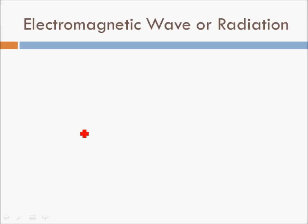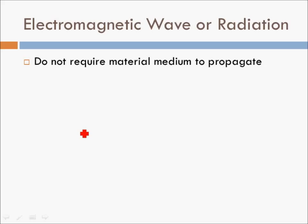Electromagnetic waves are also known as electromagnetic radiation. The first key point is that they do not require a material medium to propagate — they do not require matter. For example, sunlight travels from the Sun to Earth through the vacuum of space. In contrast, mechanical waves like sound waves cannot travel through vacuum and always need matter for their propagation.